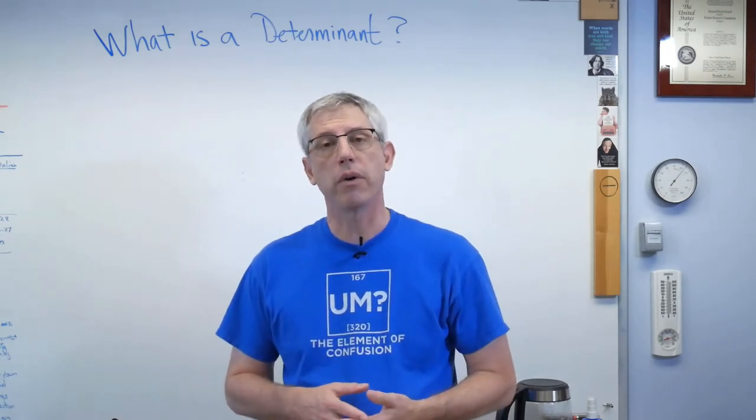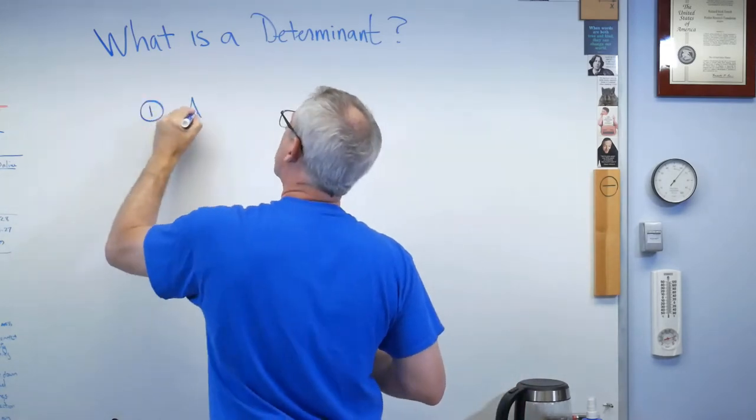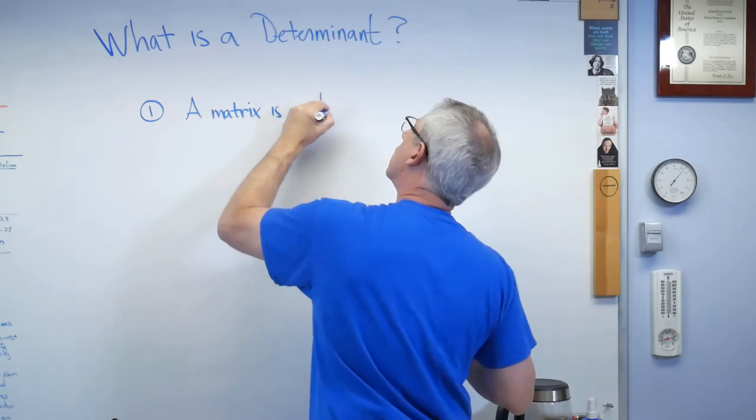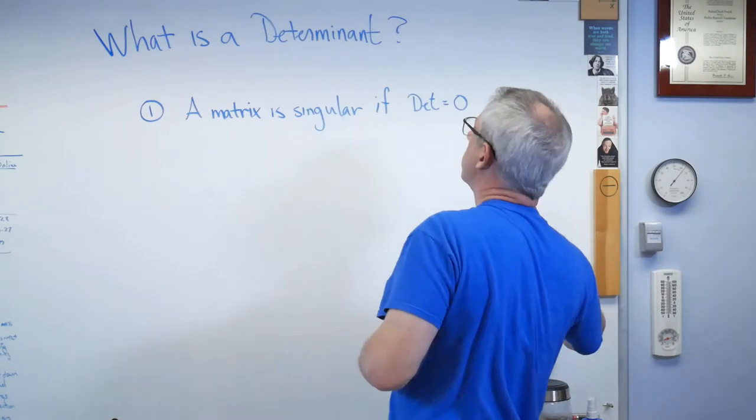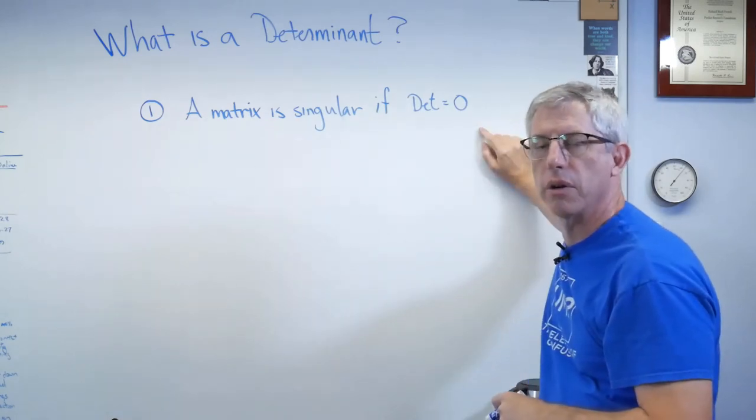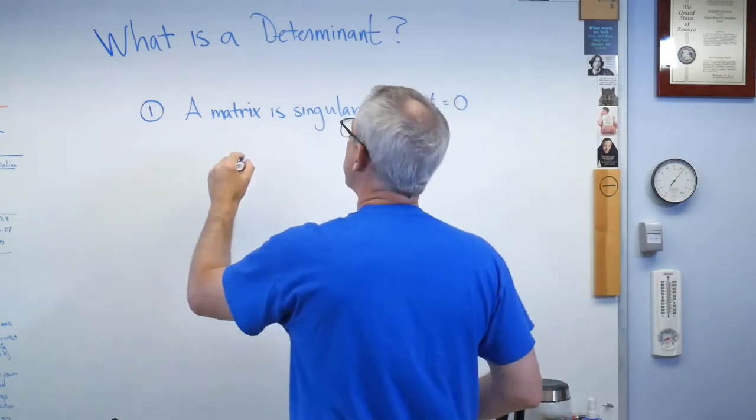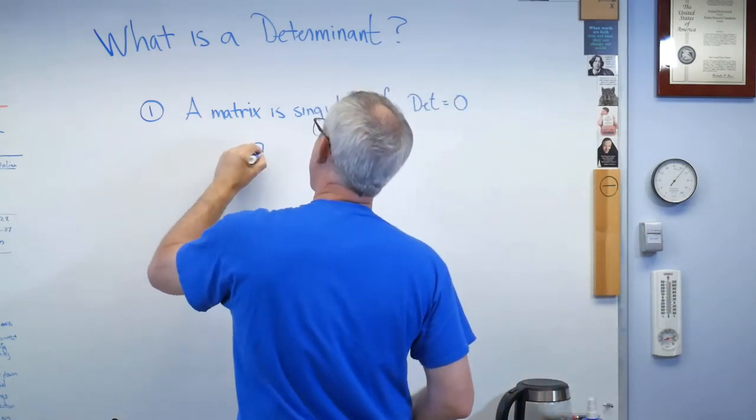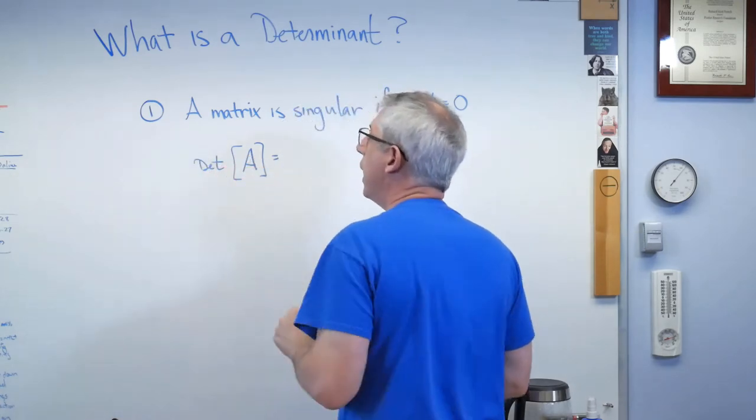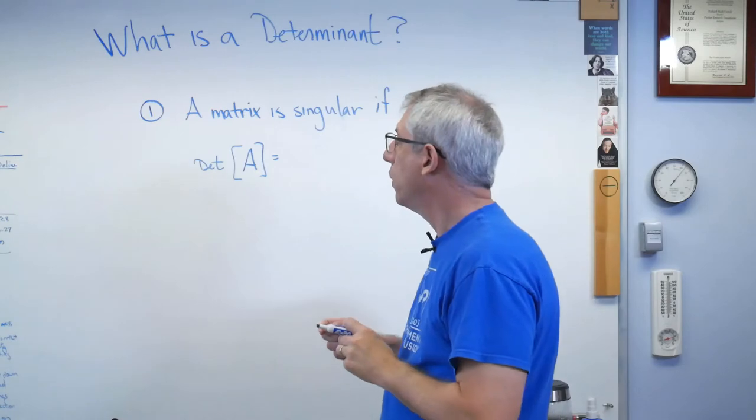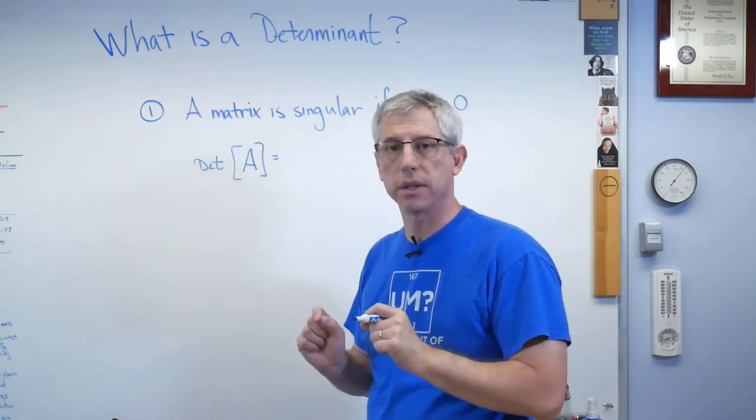There are two properties we care about. The first one is about whether a matrix is singular or not. A matrix is singular if its determinant equals zero. All right? Well, hang on a second. This isn't how they would actually write it. Let's say our matrix is A. You could write it out this way.